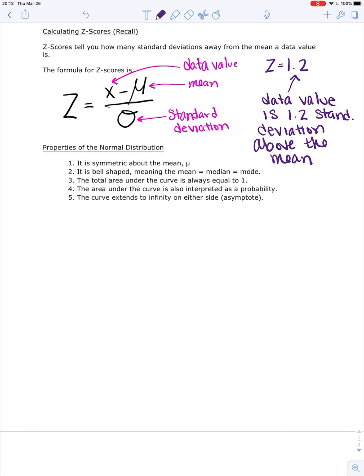It is bell-shaped, so the mean, the median, and the mode are all the same value. The area under the curve is equal to 1. The area under the curve is interpreted as a probability, and the curve extends to infinity on either side. It's what we call an asymptote.